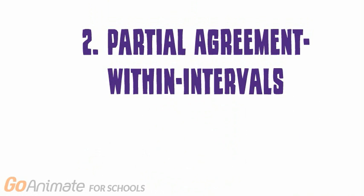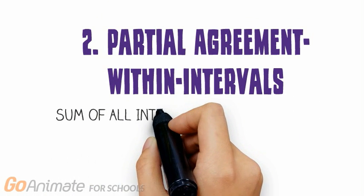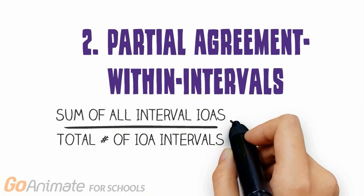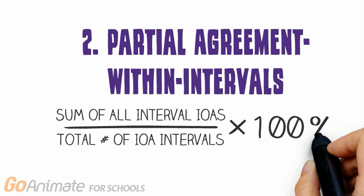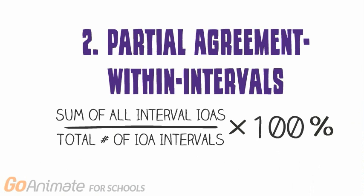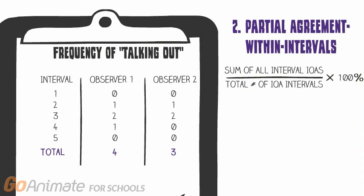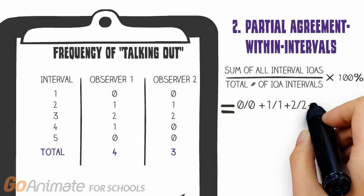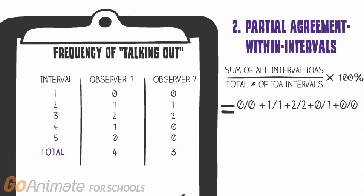The Partial Agreement Within Intervals approach divides the observation period into smaller intervals and examines agreement within each interval. This approach increases the accuracy of the agreement measure by increasing the likelihood that Observer 2 recorded the same event of the target response during observation. In our sample data, Observer 1 and 2 agreed on the number of instances of talking out during intervals 1, 2, 3, and 5, resulting in an IOA of 1, but disagreed during interval 4, resulting in an IOA of 0. Dividing by the number of intervals and multiplying by 100%, our IOA is 80%.